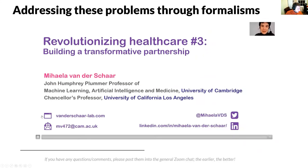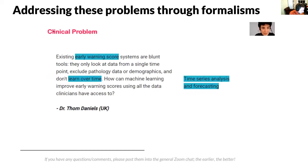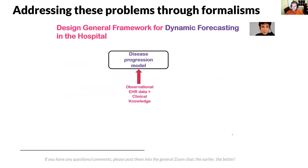We have heard from a few acute care clinicians about the challenges they face. Tom has discussed the need to develop an early warning score system that not only considers data from a single time point, but takes into account the wealth of information available about the patient during hospitalization, thereby having the ability to learn over time. This problem can be formalized and solved as a time series analysis and forecasting problem. To address Tom's challenge, as well as a few other problems brought forward by other clinicians, I'm going to introduce a general design framework for dynamic forecasting in the hospital.